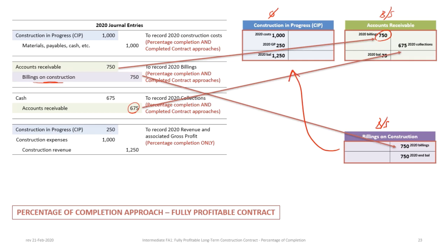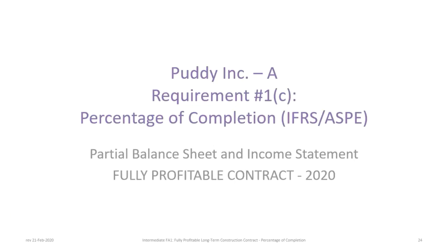In the chart of accounts, Construction in Progress is offset by the Billings account — not unlike accumulated depreciation. Billings on Construction always has a credit balance while Construction in Progress always has a debit balance. Now that we've determined gross profit for 2020 and posted journal entries to T-accounts, we will look at the partial balance sheet and income statement for the fully profitable contract in 2020.